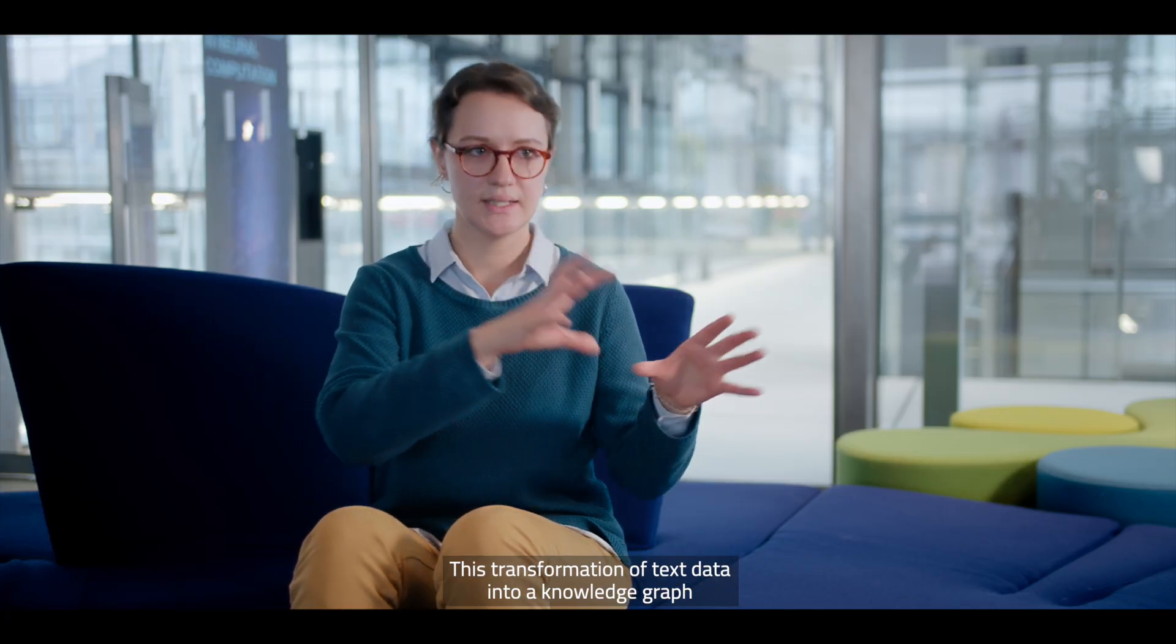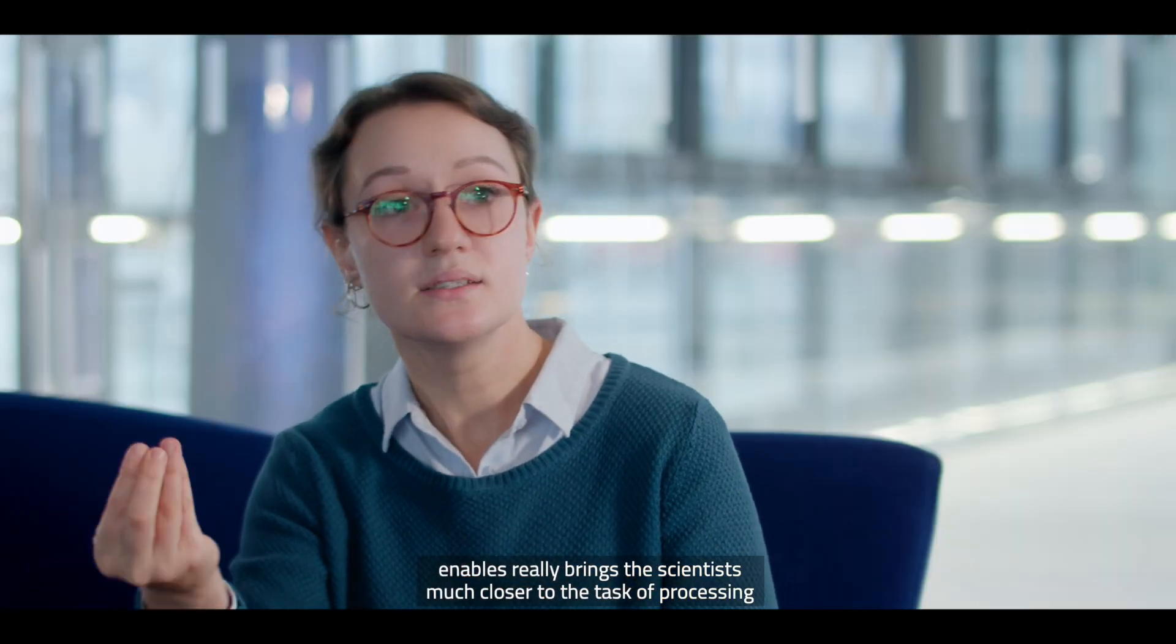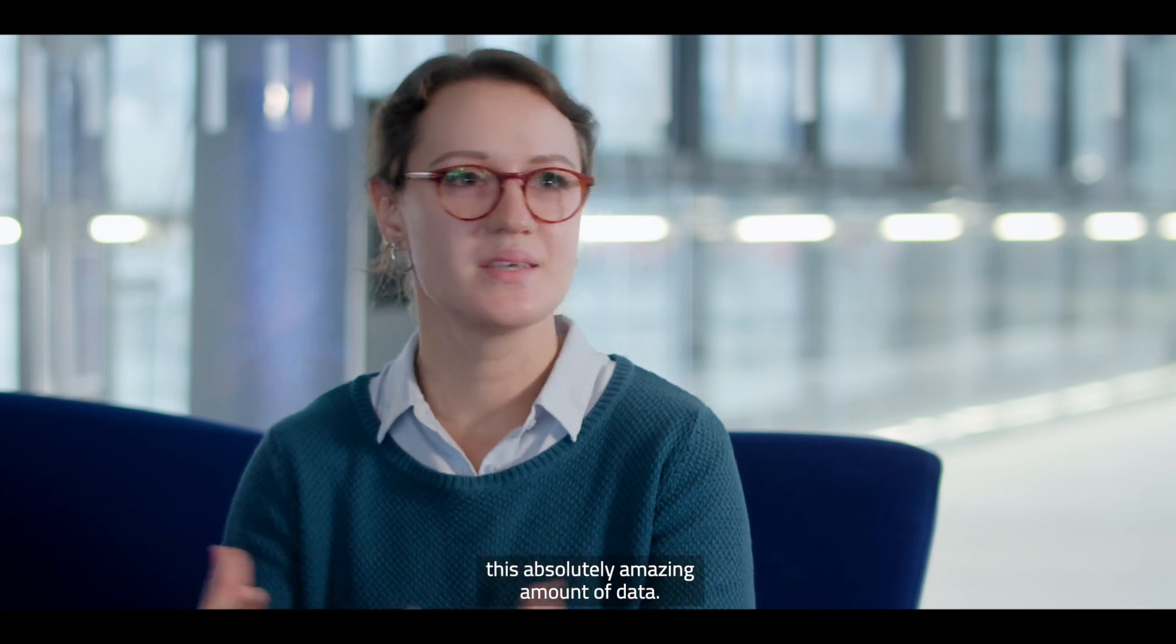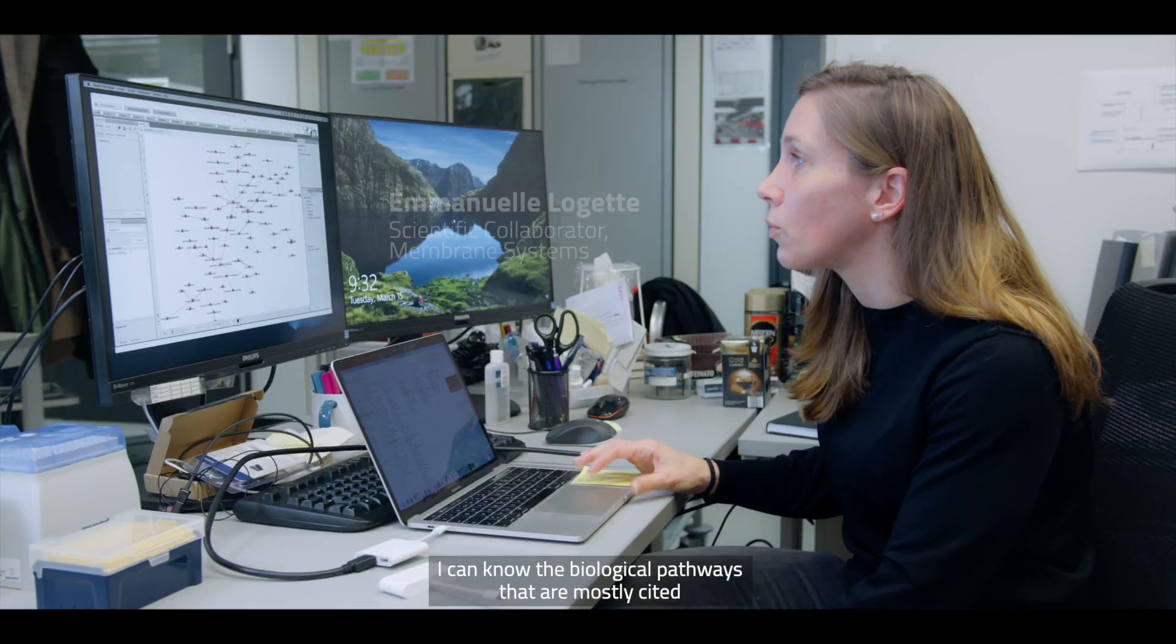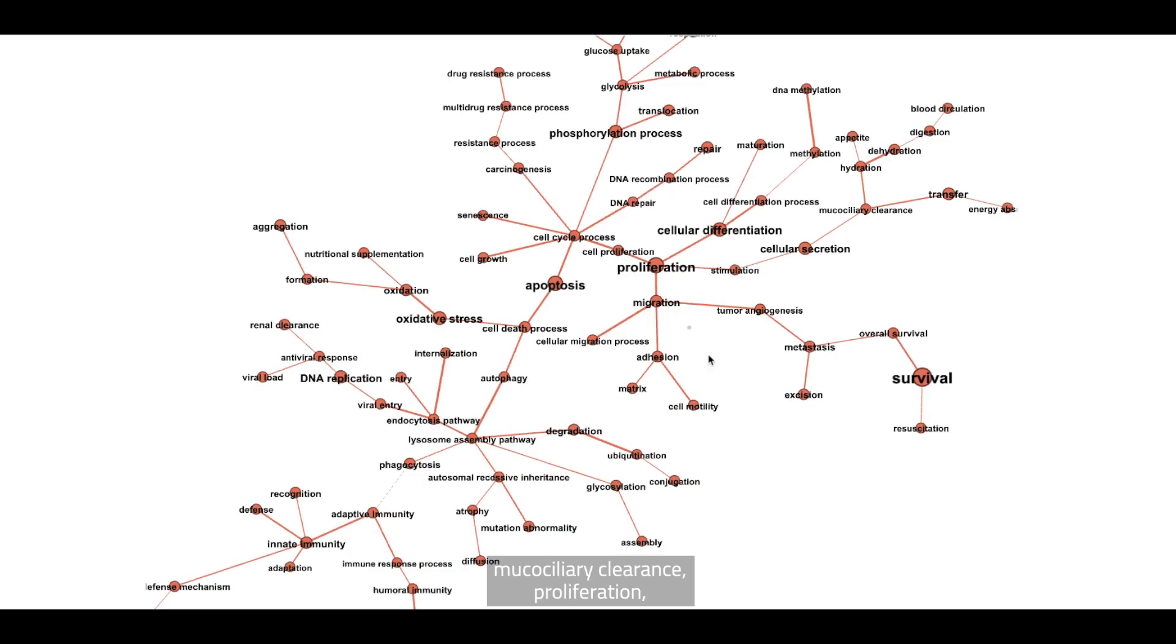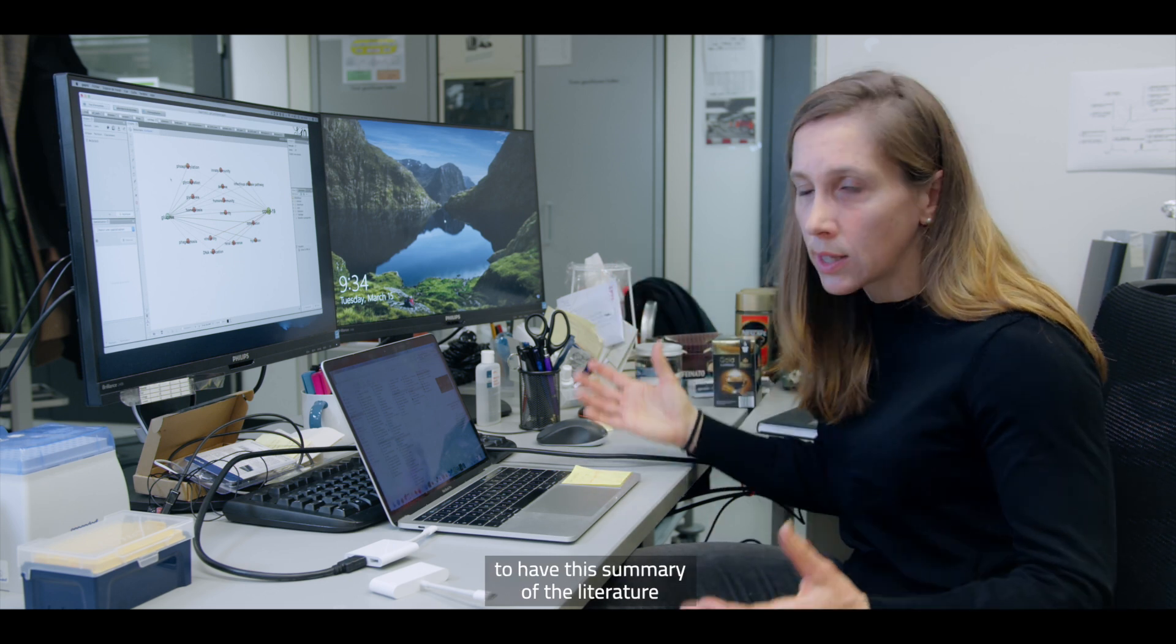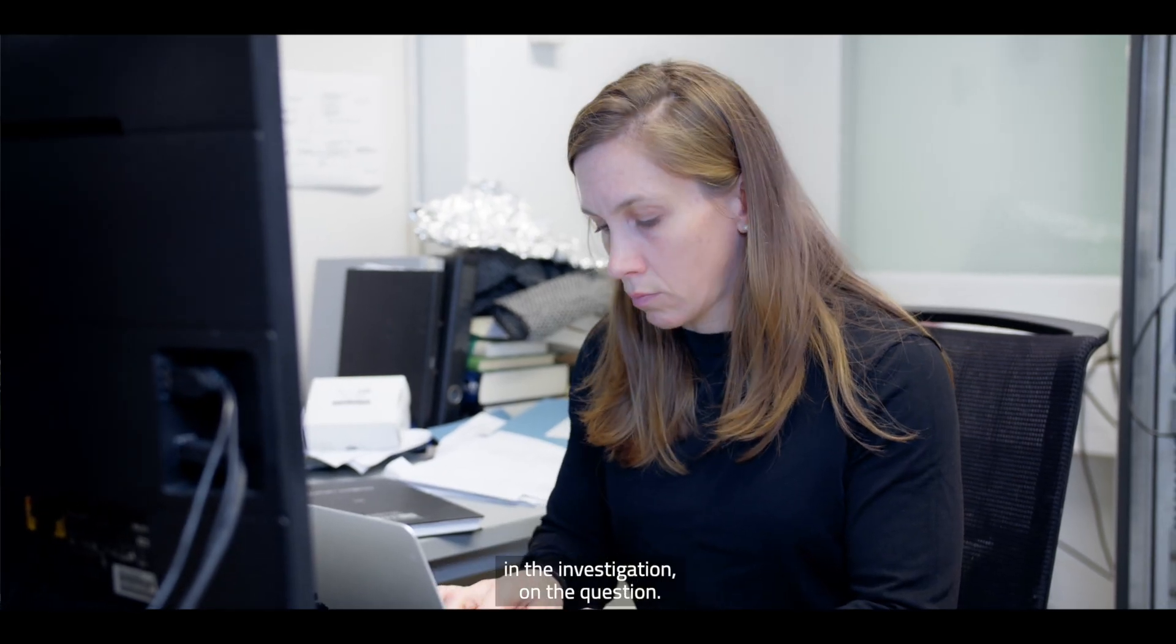This transformation of text data into a knowledge graph and then the things that our blue graph enables really brings the scientists much closer to the task of processing this absolutely amazing amount of data. With this super deep analysis, I can know the biological pathway that are mostly cited in the COVID-19 literature. So, for example, oxidative stress, mucociliary clearance, proliferation, glycosylation are pathways that are really important in the COVID-19 disease. It is a super easy way for the scientists to have this summary of the literature in a graph that guides the scientists in the search, in the investigation on the question.